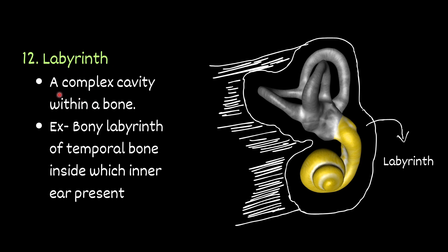Labyrinth — a complex cavity within a bone. For example, the bony labyrinth of the temporal bone, inside which the inner ear is present. The membranous labyrinth is the soft part of the internal ear, present inside this complex cavity. The cavity is present in the petrous part of the temporal bone; this cavity is called the bony labyrinth. Inside it you will find the membranous labyrinth — the soft part of the internal ear.